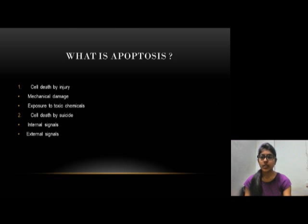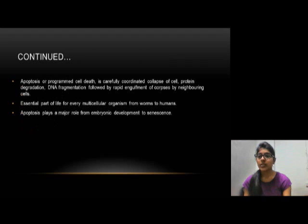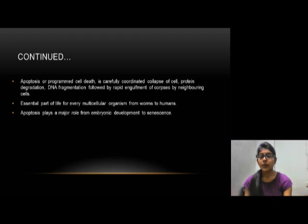What is apoptosis? Apoptosis is cell death by injury, which may be caused by mechanical damage or exposure to toxic chemicals, or cell death by suicide, which may be caused by internal and external signals. Apoptosis, or programmed cell death, is a carefully coordinated collapse of the cell involving protein degradation and DNA fragmentation, followed by rapid engulfment of corpses by neighboring cells. It is an essential part of life for every multicellular organism, from worm to human, and plays a major role from embryonic development to senescence.